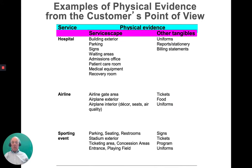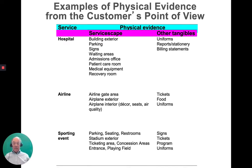So some examples — think about an airline. The servicescape aspect of the airline gate, the airplane exterior, the airplane interior, what it looks like and what it's supposed to convey in terms of quality. Then the other intangibles: the tickets, the food, the uniforms. In sporting events, you see similar things. Think about what the servicescape and other tangibles are trying to say about the level of service that's going to be delivered to you.